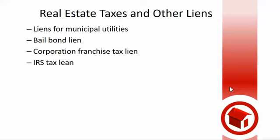IRS lien — if you fail to pay your personal taxes. Believe it or not, the IRS plays fair. They actually fall in line like they're supposed to. You'd assume since state taxes wipe everybody out, the federal would be a bigger bully — they're actually not. They file in third or fourth position. They are quicker to get their money and force issues, but they don't wipe everybody else off. So if you're debating whether to pay your federal income taxes or your state real estate taxes, I'd pay state real estate taxes first — they're going to take your property sooner.